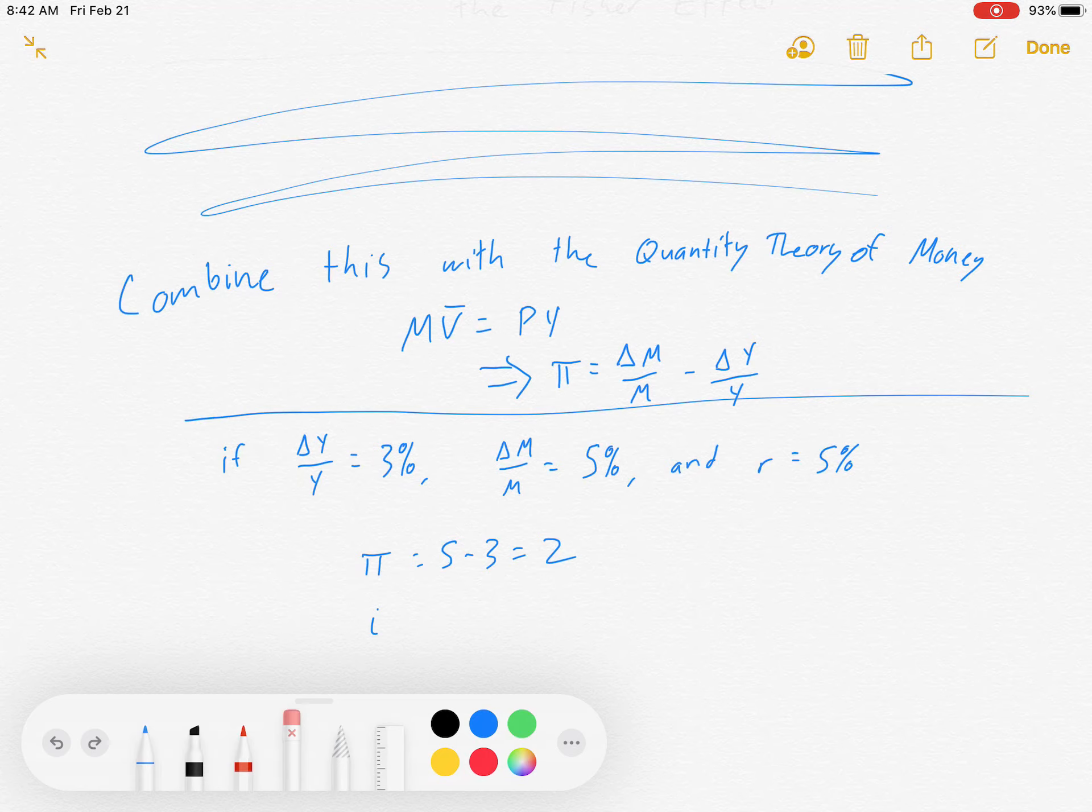So nominal interest rates, the next thing we might be interested in, are r plus π, which is 5, there's your r, plus π, which we just solved for is 2, equals 7%.